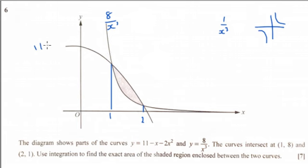our 11 minus x minus 2x squared graph. So if we were to integrate the 8 over x cubed graph, that would get us the area underneath the shaded bit. If we were to integrate the 11 minus x